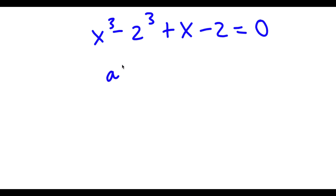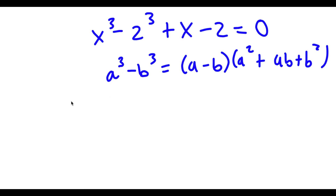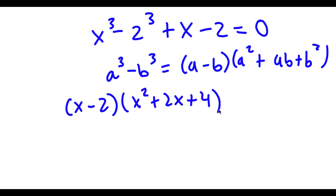Now if I have something in the form a to the power of 3 minus b to the power of 3, this is equal to a minus b times a squared plus ab plus b squared. So in this case, x to the power of 3 minus 2 to the power of 3, I can rewrite it as x minus 2 times x squared plus 2x plus 2 squared, which is 4, plus x minus 2 is equal to 0.